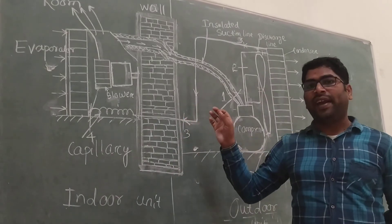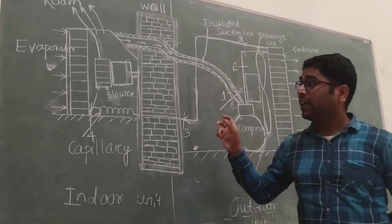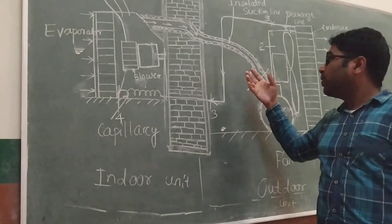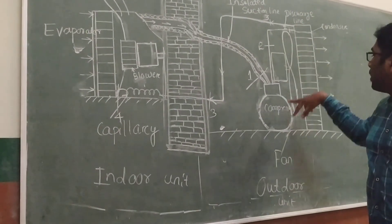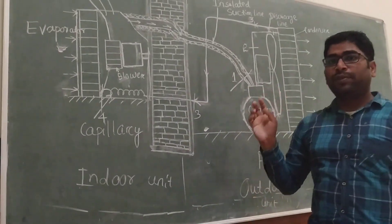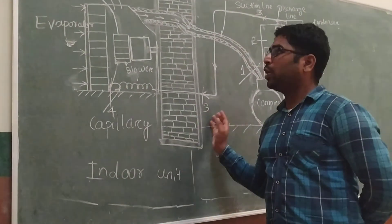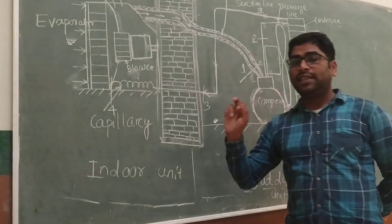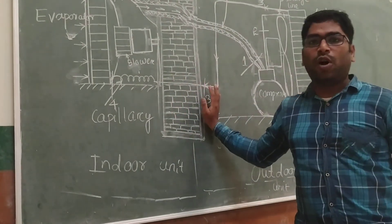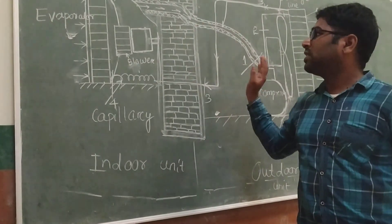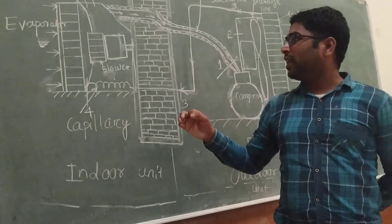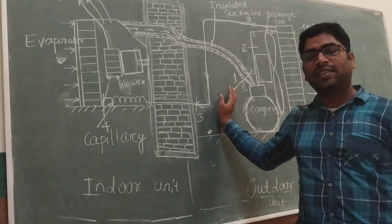Another difference between window AC and split AC is the maintenance cost. In split AC, one unit is kept outside the room — the condenser and compressor are all kept outside. So the maintenance charge is higher compared to window AC. With window AC, all units are in one place so maintenance is more comfortable, but with split AC the maintenance cost is more. That's all about the split air conditioning system.